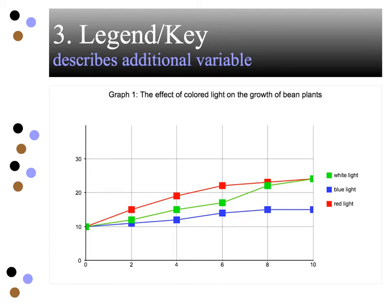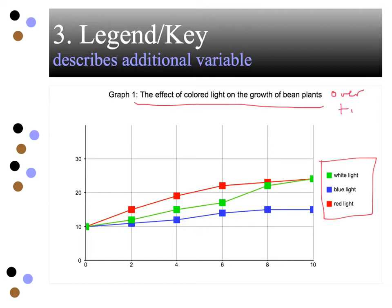We have a legend, otherwise known as the key, and it describes the additional variables. In this particular title, it doesn't talk about time being a factor. What I'd really love to see is 'over time,' because this indicates that this particular experiment has two independent variables: the colored light and time. Two independent variables and one dependent variable — the growth. So we use the legend to identify additional IVs.